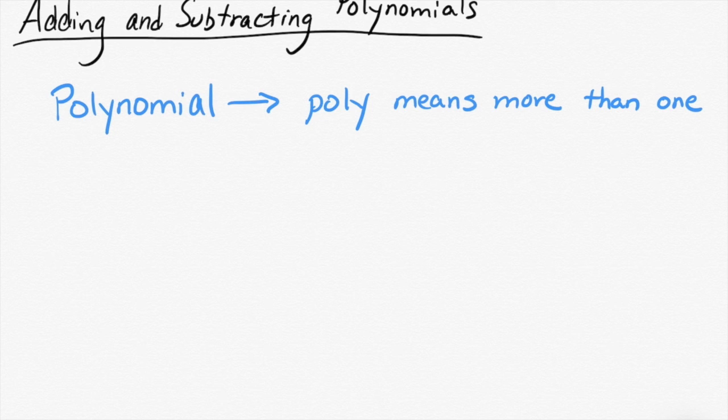Poly means more than one. So a polynomial, depending on who you ask, either means name or I prefer to think of it as term. So polynomial means more than one term.